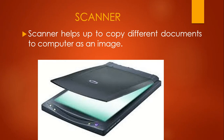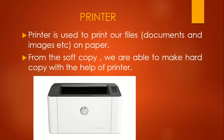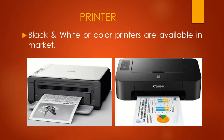Scanner — this hardware helps us to copy different words and images from the book. Hard copy of the document is copied to the computer. The printer does the opposite to the scanner — it helps us print the data which we see on the computer screen. From the soft copy, we are able to make hard copy. Hard copy can be in black and white or in colors.